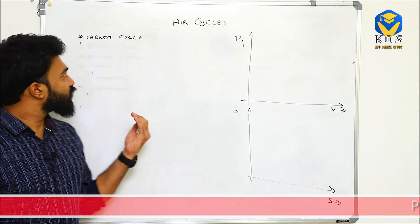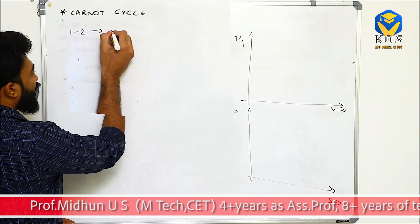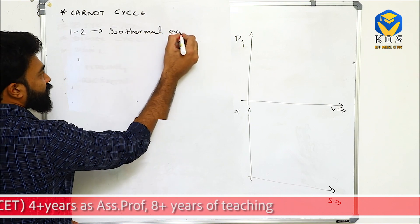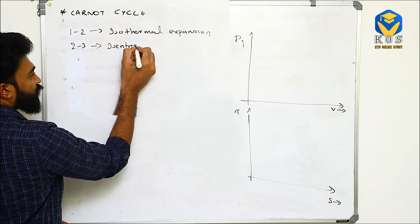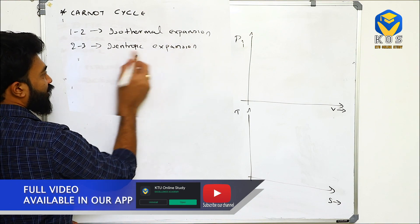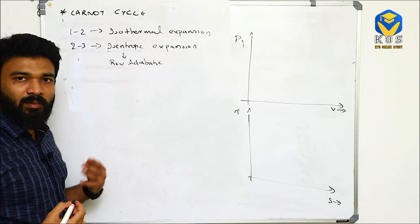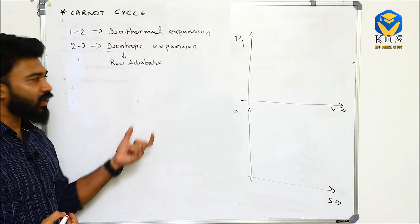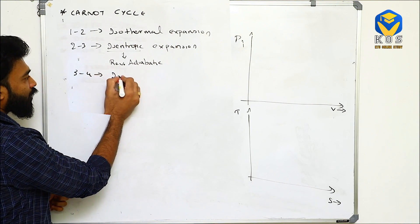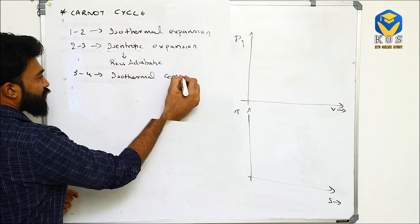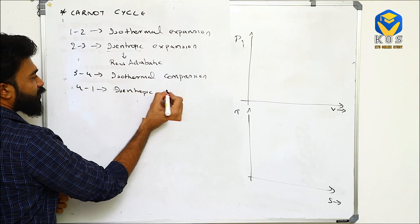The Carnot cycle consists of four different processes. The first process is 1 to 2, that is isothermal expansion. Process 2 to 3 is isentropic expansion — isentropic can also be called reversible adiabatic. Process 3 to 4 is isothermal compression, and 4 to 1 is isentropic or reversible adiabatic compression.